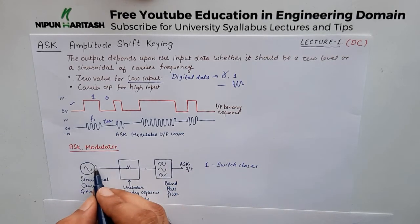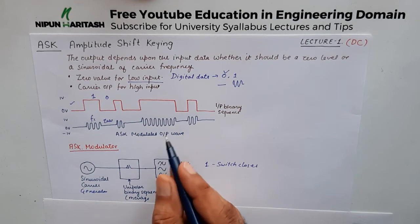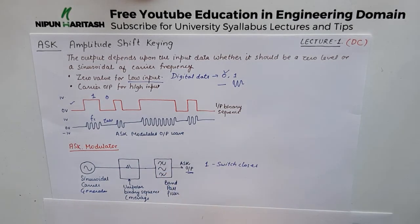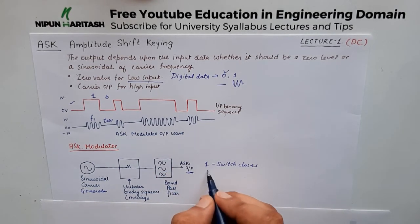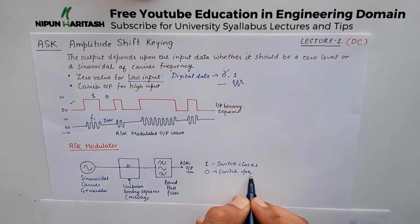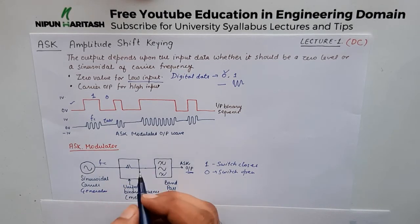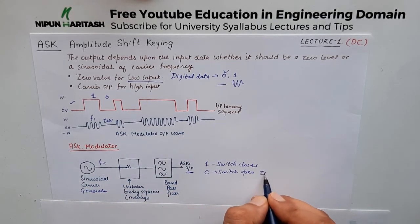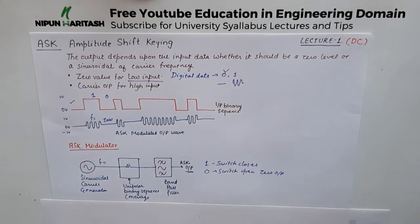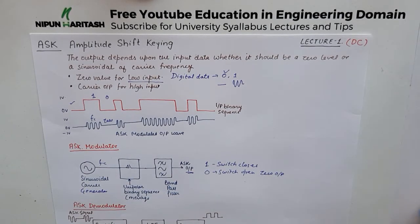When the switch closes it forwards the carrier frequency to the bandpass filter, and this output is collected. At zero, the switch is open so we do not get the carrier frequency FC through this block and we get a zero output as intended. So the modulator is pretty simple.